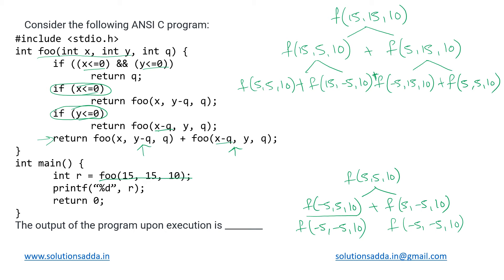Now x and y are both negative, so the first condition is satisfied and the value returned is simply q. Both of these return q which is 10, so their sum is 10 plus 10 = 20. Therefore this call to f(5, 5, 10) returns 20, and that same call appearing elsewhere also returns 20.